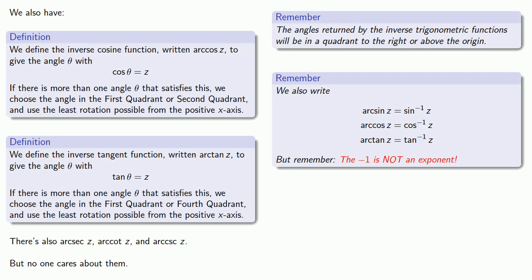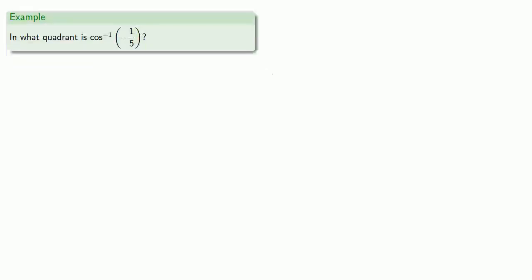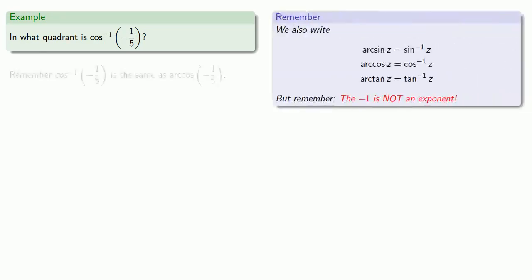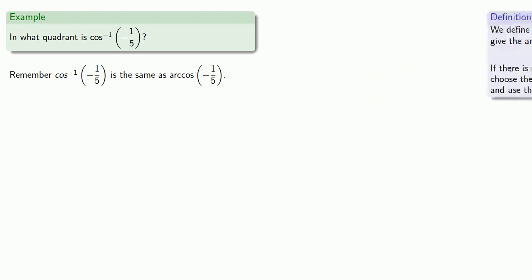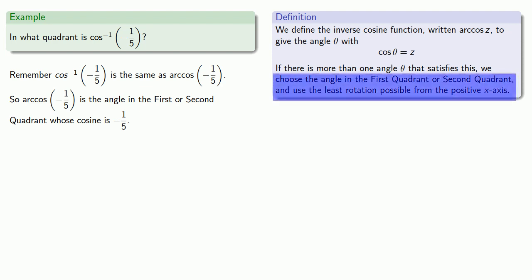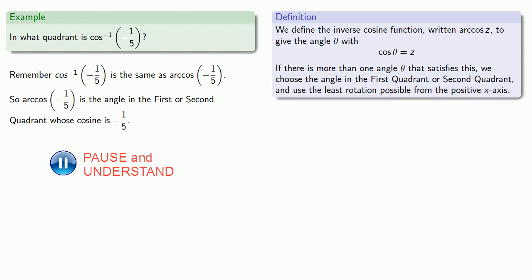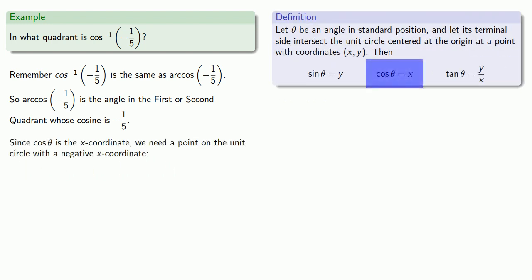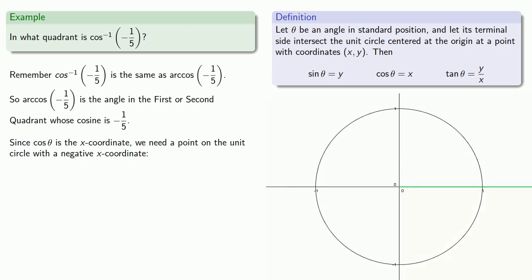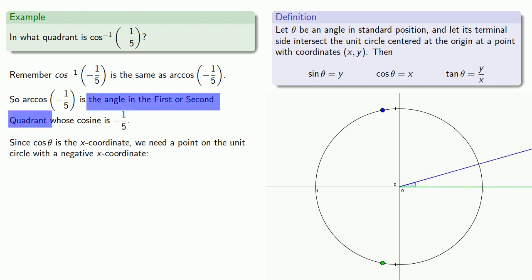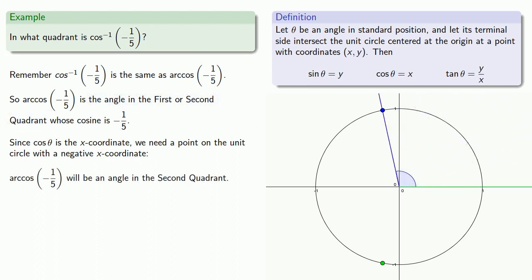It's important to remember the minus one is not an exponent — it refers to the inverse function. For example, in what quadrant is the inverse cosine of minus 1 fifth? Cosine negative 1 of negative 1 fifth is the same as arc cosine of minus 1 fifth. According to our definition, the arc cosine of minus 1 fifth is the angle in the first or second quadrant whose cosine is minus 1 fifth. Since cosine theta is the x-coordinate, we need a point on the unit circle with a negative x-coordinate. There are two such points, but the arc cosine must be a first or second quadrant angle, so arc cosine of minus 1 fifth will be an angle in the second quadrant.